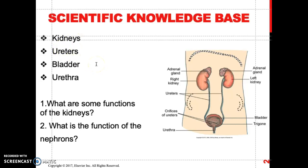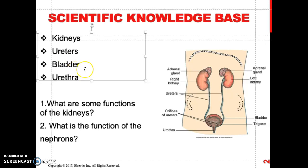The bladder's main function is for storage of urine. The bladder lies in the pelvic cavity behind the symphysis pubis, and it stores about 400 to 600 mls of urine.